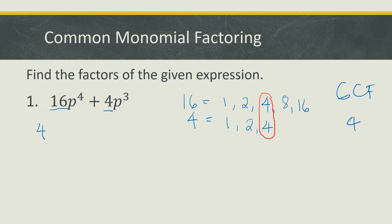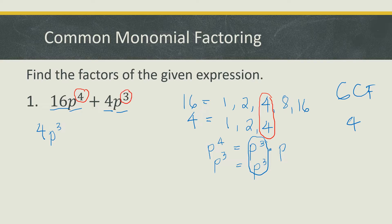Next, get the common factor of the variables. We have p to the 4th power and p to the 3rd. Since p to the 4th is p cubed times p, the common factor is p cubed. Simply check the lowest exponent in each term — we have 4 and 3, so 3 is the smallest, and we use p cubed as our common factor.